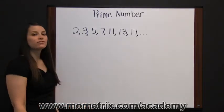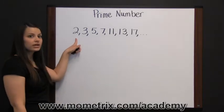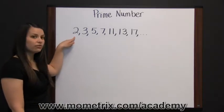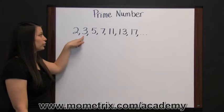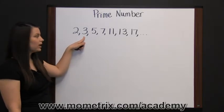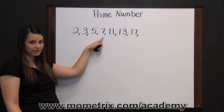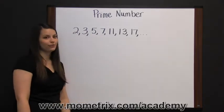Here is a list of the first seven prime numbers. Two can only be divided by itself and one. Three can only be divided evenly by itself and one. Five, the same. Seven, so on and so forth.